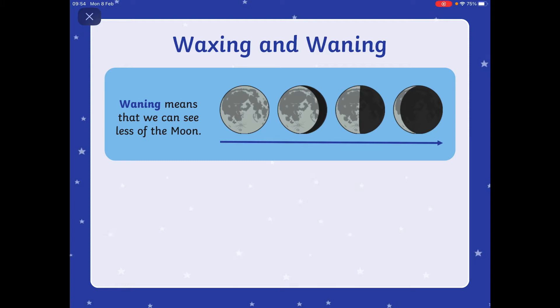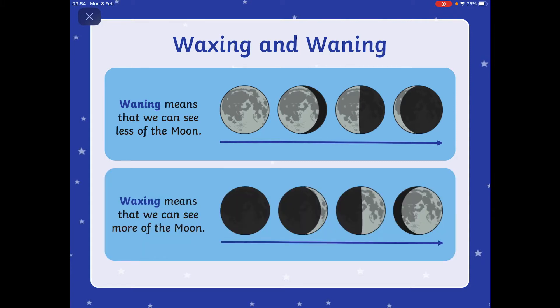Here are two terms that you may have heard of: waxing and waning. Waning means that we can see less of the moon. So you might be able to guess that waxing means that we can see more of the moon — gradually we're seeing more of the moon when it's waxing.